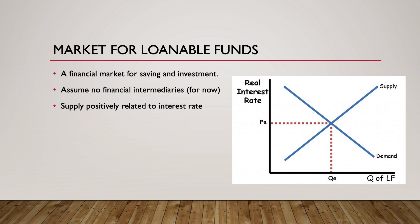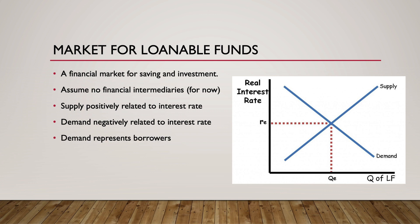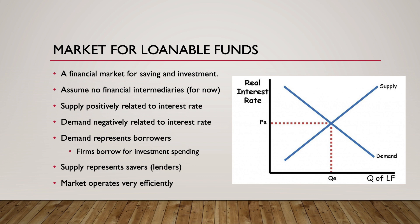The supply of loanable funds is positively related to the interest rate, since savers will supply larger amounts of loanable funds at higher interest rates. The demand for loanable funds is negatively related to the interest rate, since borrowers will borrow less money at higher interest rates and more money at lower interest rates. The demand curve represents the amount that individuals want to borrow at various interest rates. This includes students taking out loans for college, consumers borrowing to buy a car, or entrepreneurs borrowing funds to start or expand a business. Firms borrow so that they can invest in new plants or new equipment, expand facilities, engage in R&D, and develop new products. The loanable funds market behaves similarly to a competitive market for goods and services.